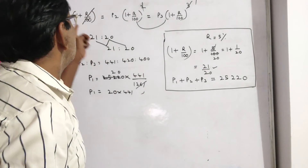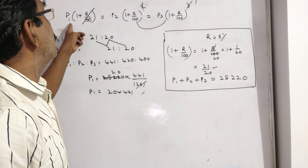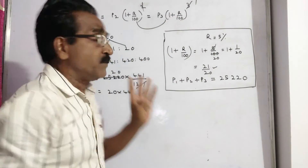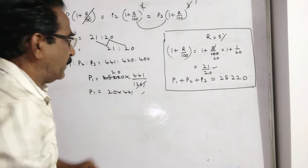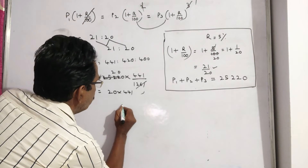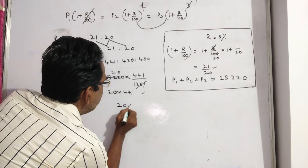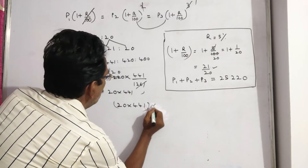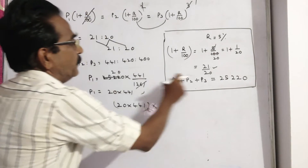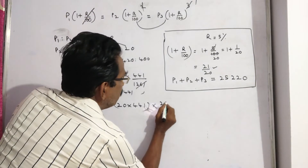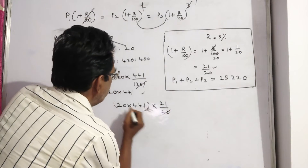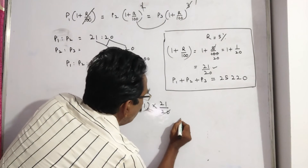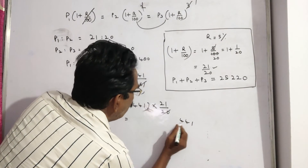Now we want the installment. Installment is equal to P1 into 1 plus R by 100. These three are equal installments; you can find any value. So P1 is 20 into 441, and multiplying into 1 plus R by 100, which equals 21 by 20 — the 20 gets cancelled — giving 441 into 21.